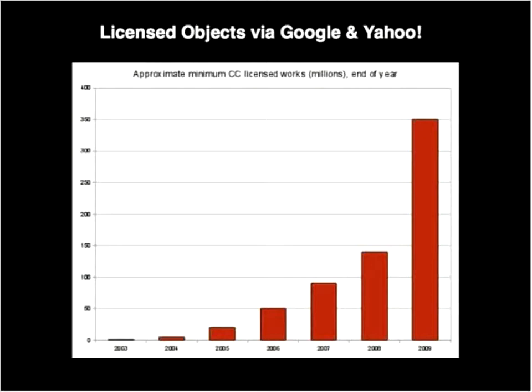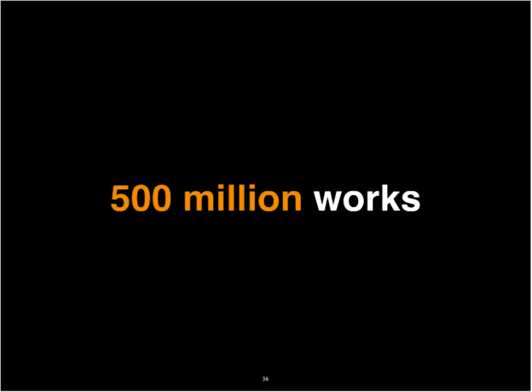Since Creative Commons licenses and the organization were founded back in 2001, the number of Creative Commons licensed works on the web has grown each year, almost exponentially. Today we estimate through Google and Yahoo search engine counts that there are over 500 million works on the web. These are estimates based on those people who have properly marked up their work — using our license chooser or Flickr to choose a license. There are probably a lot of works out there where people just say this is under a CC license but don't provide the machine-readable metadata.